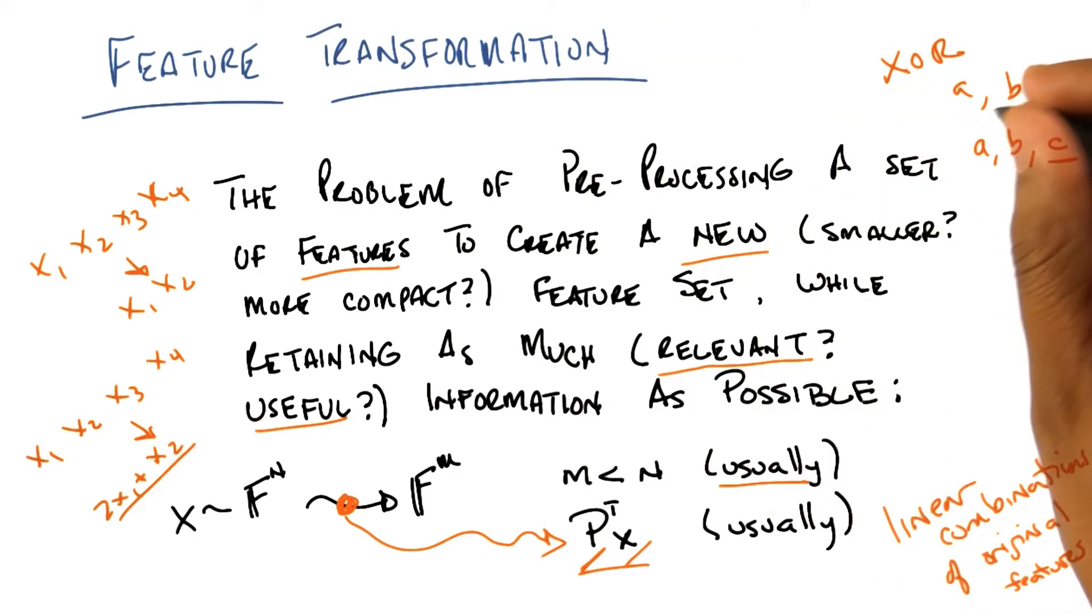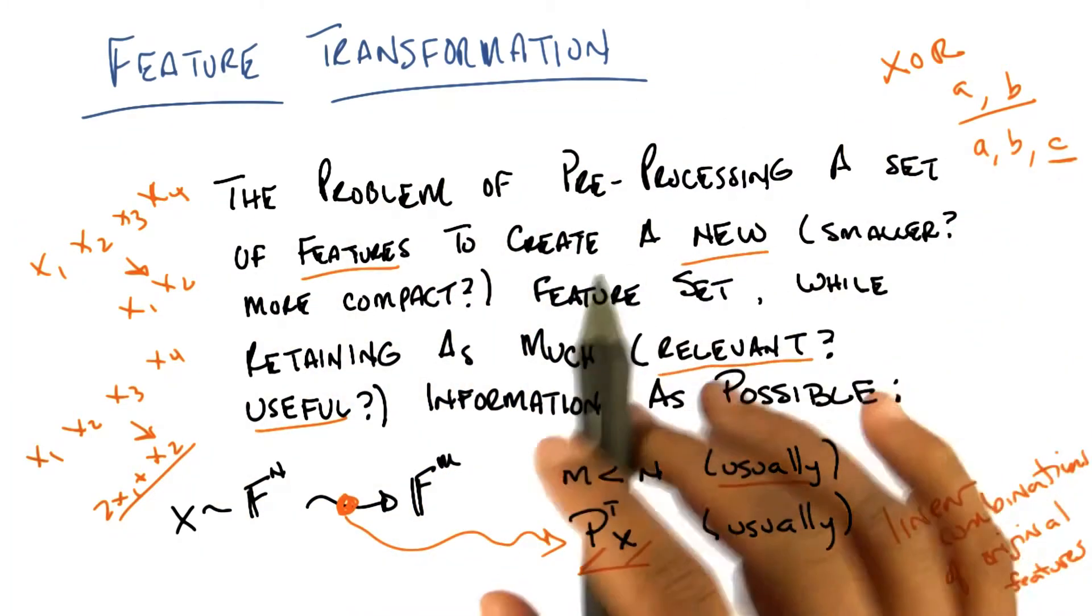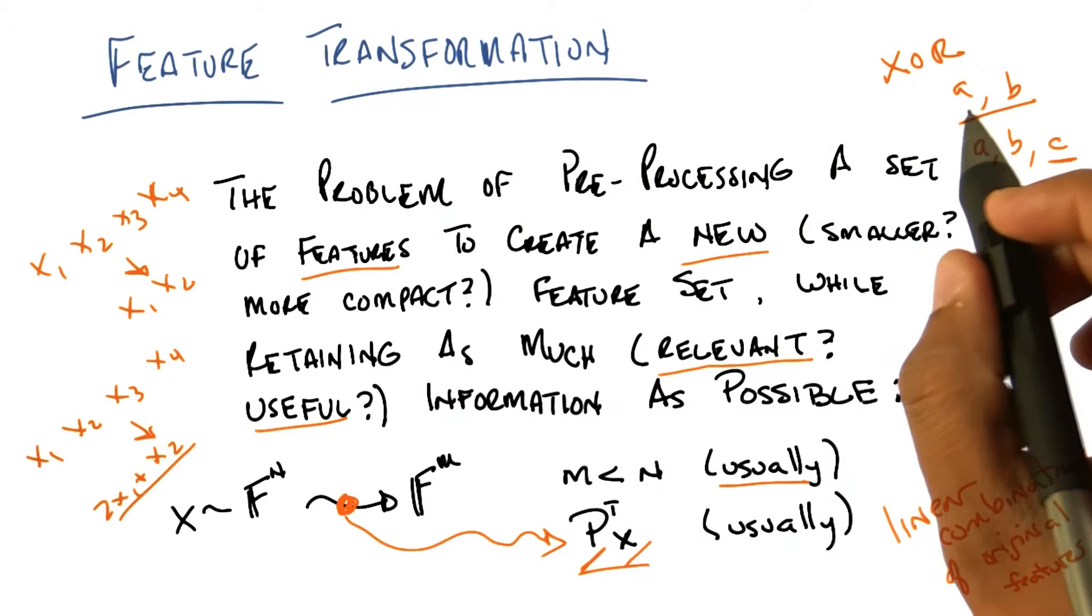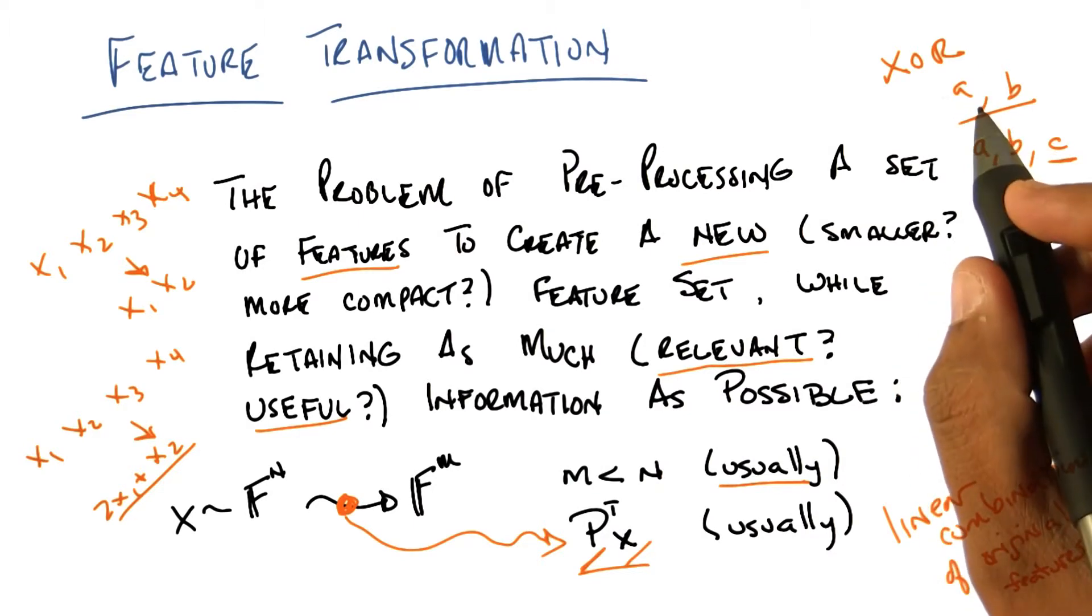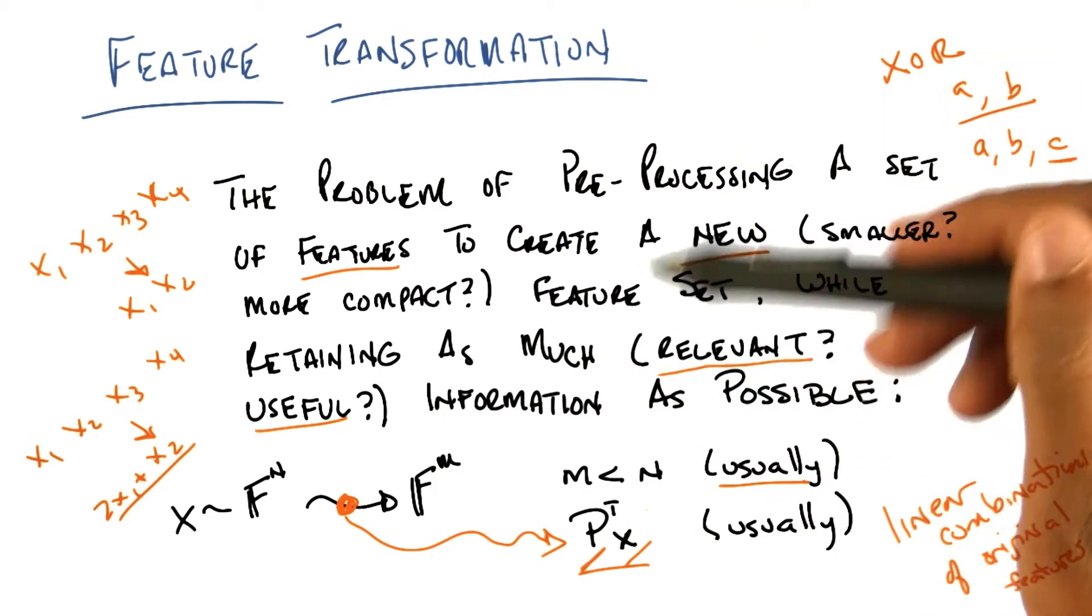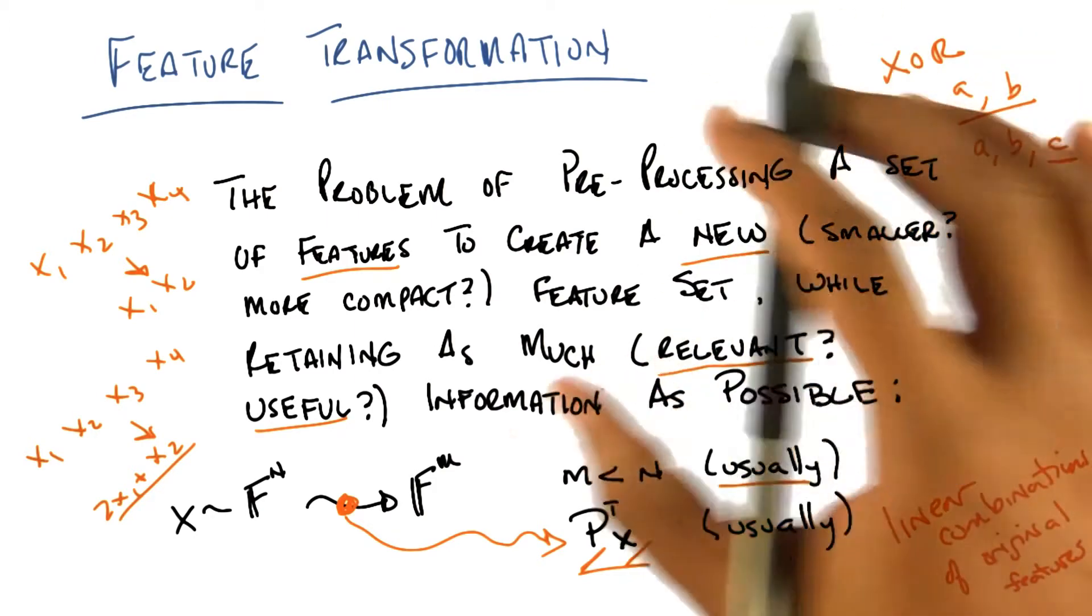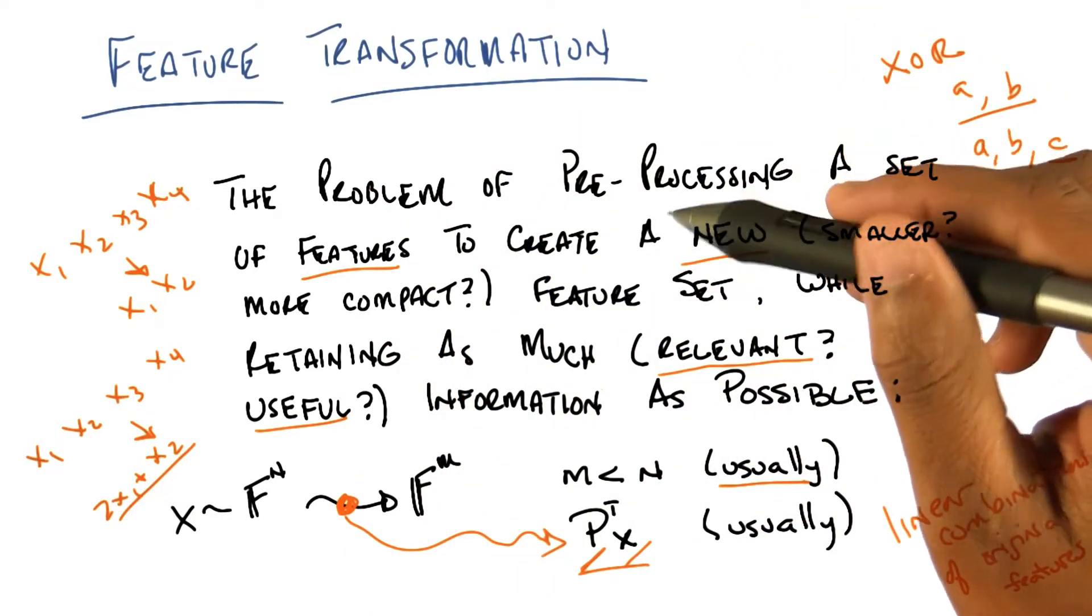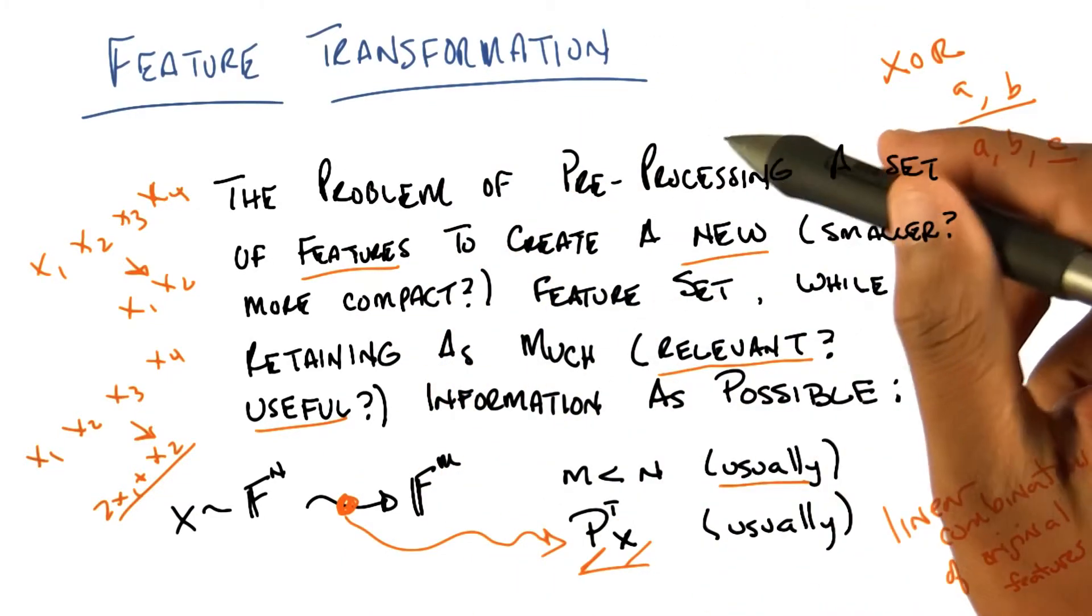And in this case, a feature transformation where we went to a higher number of features. And today, what we're going to be talking about is linear transformations, as opposed to non-linear transformations. And we're going to be focusing specifically on the case where we're trying to reduce the number of dimensions. So the implicit assumption here, right, the kind of domain knowledge that we're bringing here, the belief that we're bringing here, is that we don't need all n features.